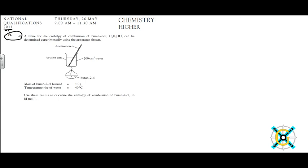So let's first read the question. The enthalpy of combustion of butan-2-ol, electric formula shown, can be determined experimentally using the apparatus shown below. The mass of butan-2-ol burnt is equal to one gram. The temperature rise of water is 40 degrees Celsius. Use these results to calculate the enthalpy of combustion of butan-2-ol in kilojoules per mole.